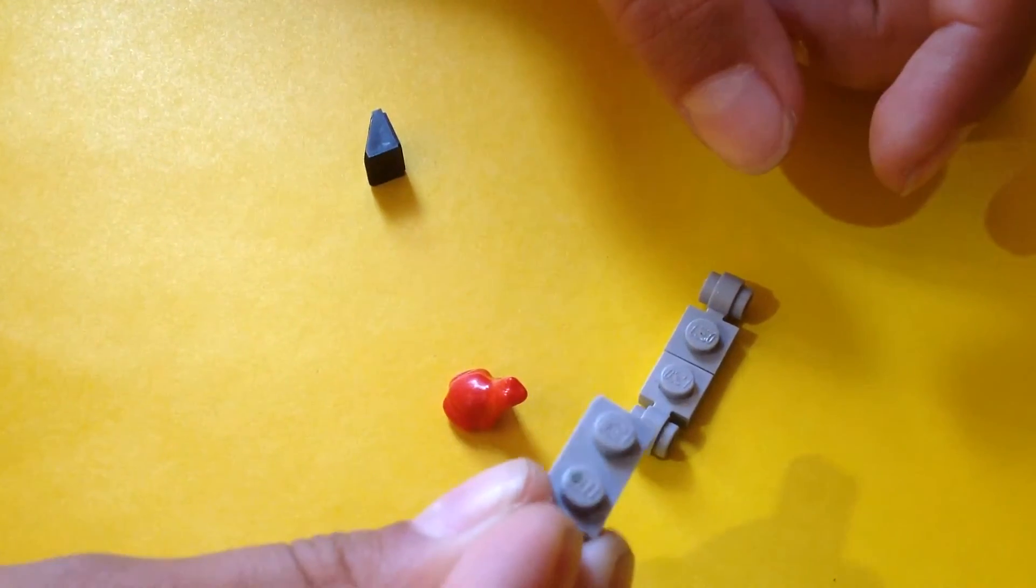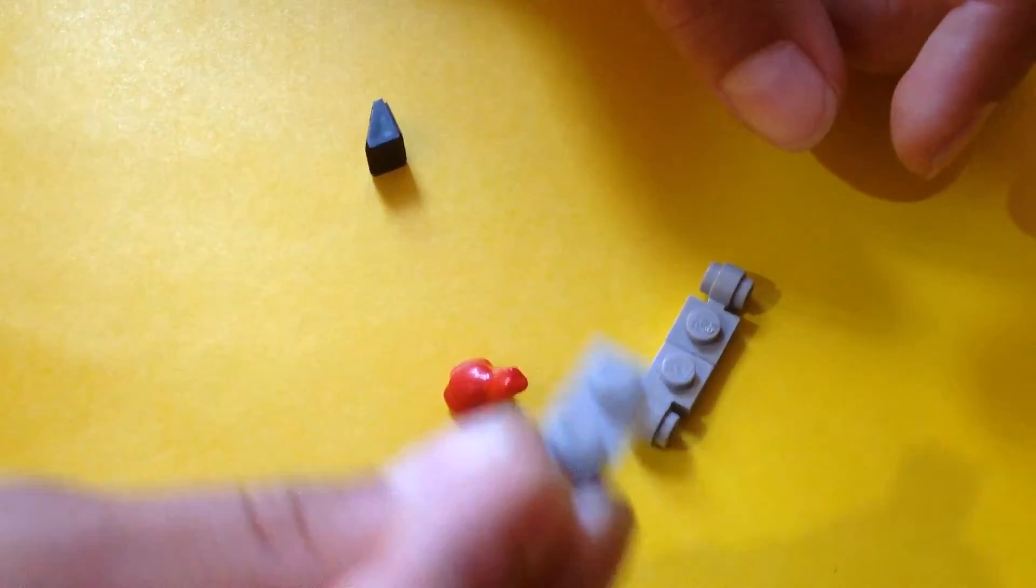First, you take the basic frame. Again, the basic frame. Put it on top of the wheels.